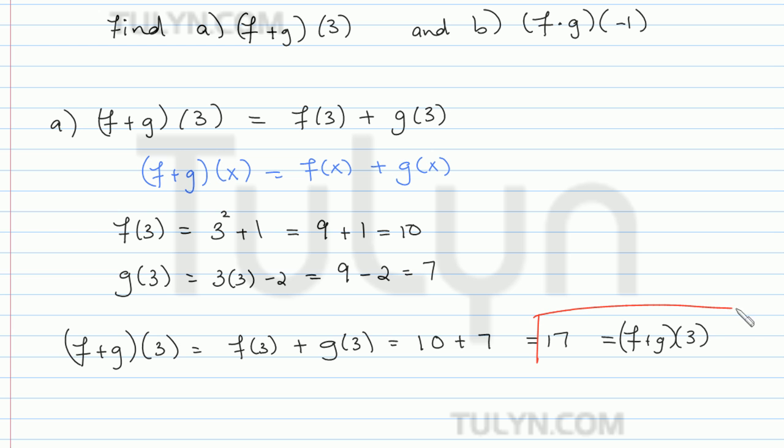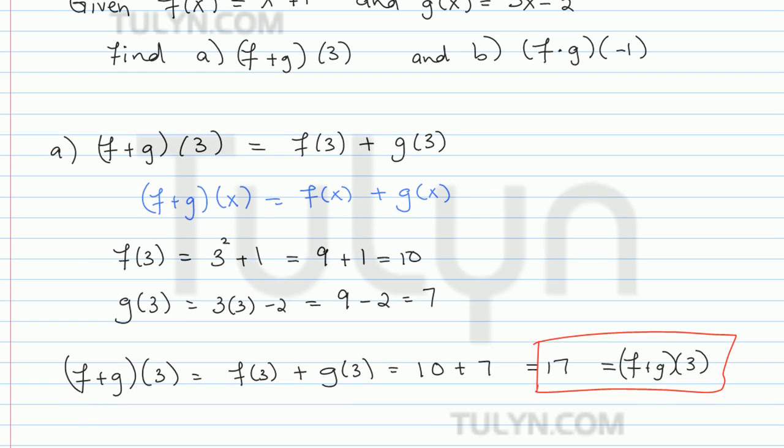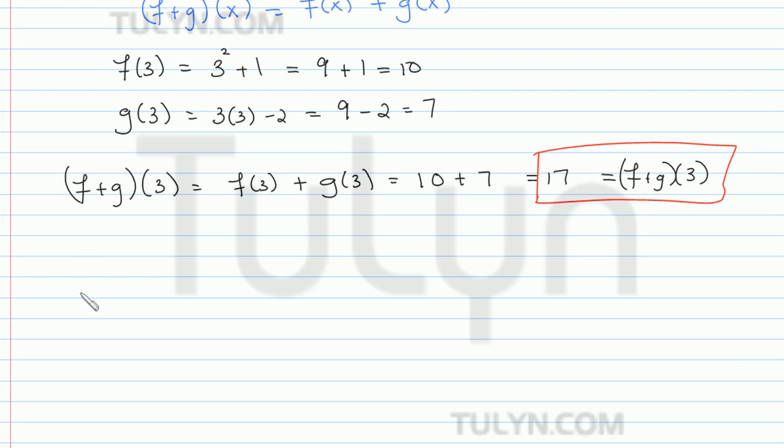So let's put a red box over that to signify that we found our answer. So now for part b, let's remind ourselves of part b. So it's f times g evaluated at negative 1.